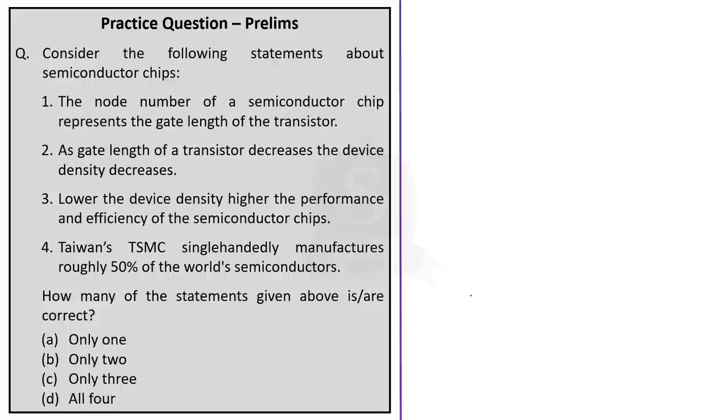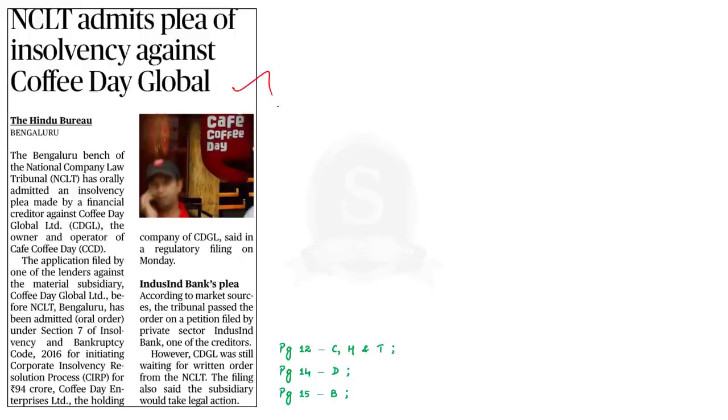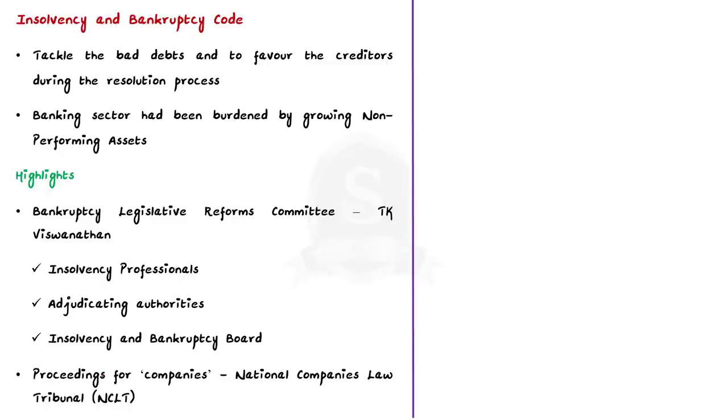With the learned points in mind, now we will move on to the next article discussion. Look at this news article. It says that the National Company Law Tribunal has accepted a petition for insolvency against Coffee Day Global Limited. The application was made under Section 7 of the Insolvency and Bankruptcy Code. NCLT has orally admitted the plea allowing the initiation of the corporate insolvency resolution process for Coffee Day Global. This is all about the news article. In this context, let us discuss about the insolvency and bankruptcy code in detail. Insolvency occurs when a company can't pay back the money it owes to its creditors. In a growing economy like India, this is a significant problem because it can lead to a lack of credit flow and the accumulation of bad loans. So, in order to address this issue, the Indian government introduced the insolvency and bankruptcy code in 2016.